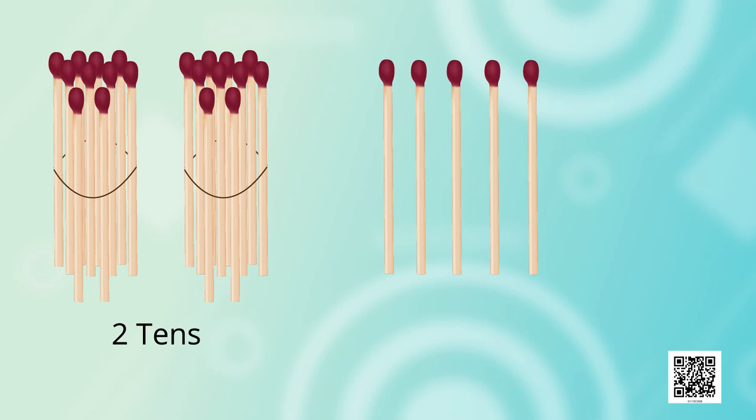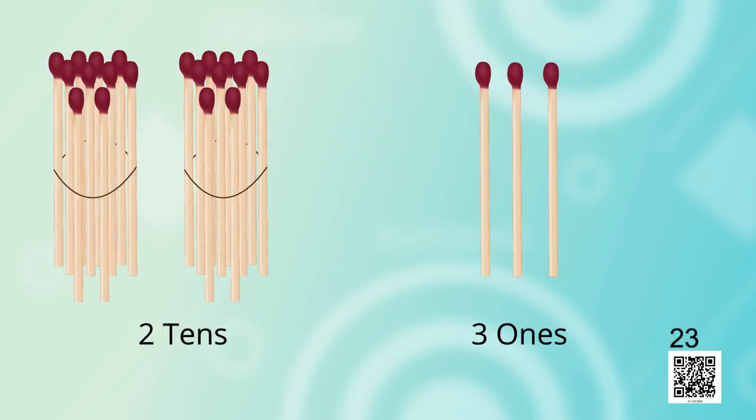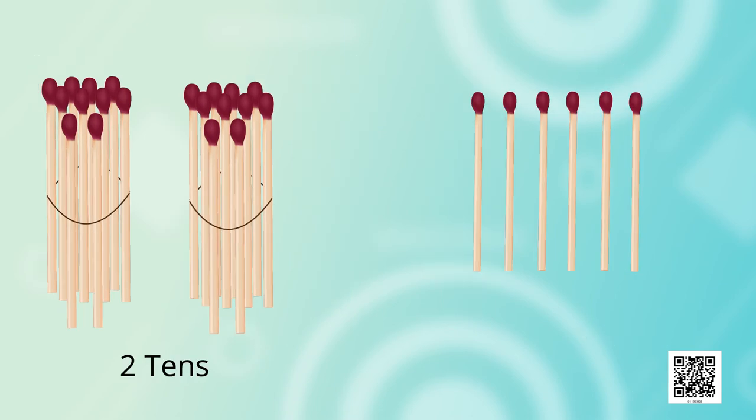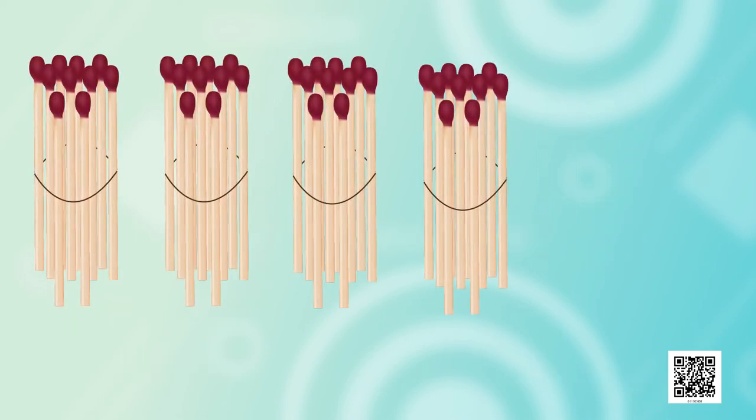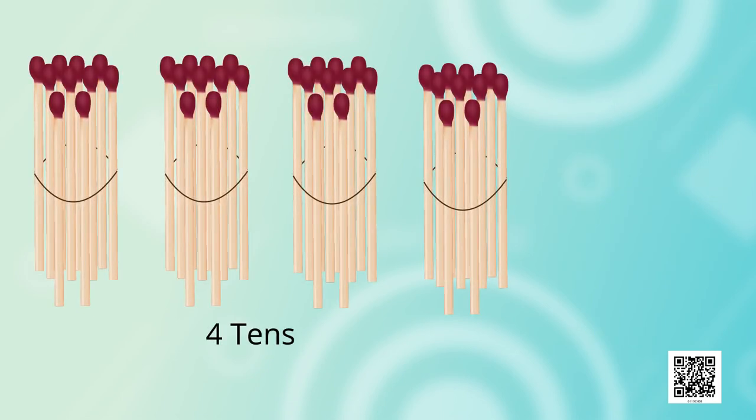2 tens and 1, 2, 3, 4, 5. 5 ones. That is 2, 5, 25. 3 tens and 3 ones. 3 and 3, 33. 2 tens and 3 ones. 23. 4 tens and 2 ones. 42.